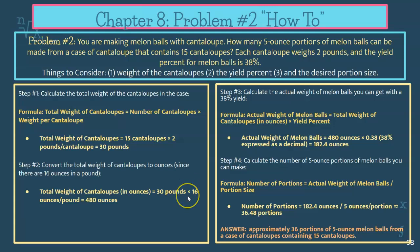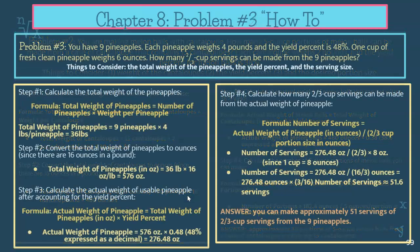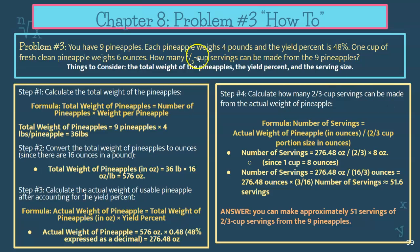If you have any questions, ask your teacher for clarification or reference the steps. Our last problem is going to be about pineapples. You have nine pineapples, each pineapple weighs four pounds, and the yield percent is 48%. One cup of fresh, clean pineapple weighs six ounces. From this, how many two-third cup servings can be made from the nine pineapples? Things to consider: the total weight of the pineapples, the yield percent, and the serving size.